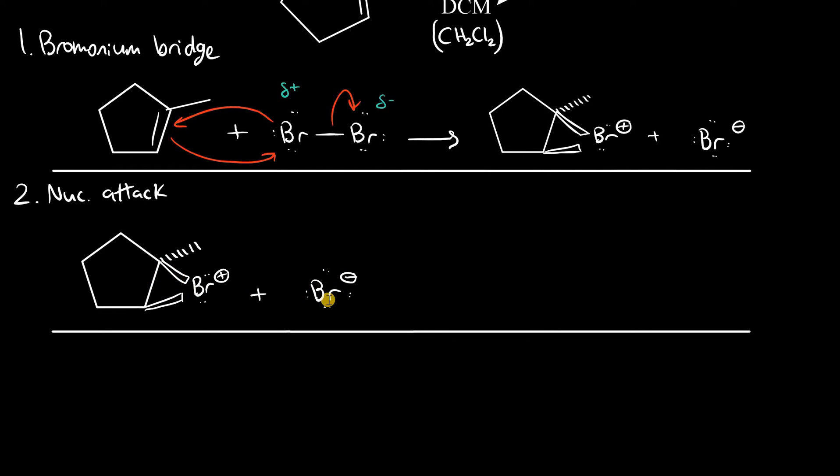So the only way the nucleophile can attack is from the back. Electrons flow from the bromide to a carbon involved in the three-membered ring and establish in the back. The bridge then opens up in this direction. The methyl inverts from a dash to a wedge, and the bromide nucleophile establishes in the back. The bromine involved in the bromonium ion bridge establishes on a wedge right here.